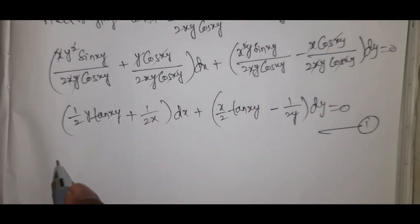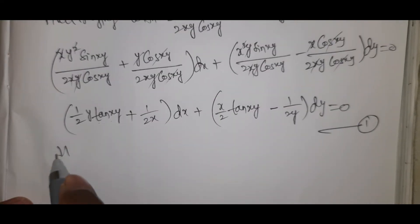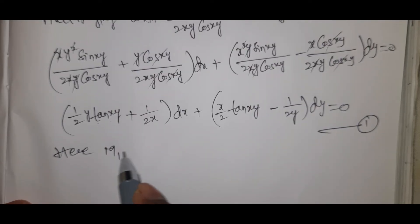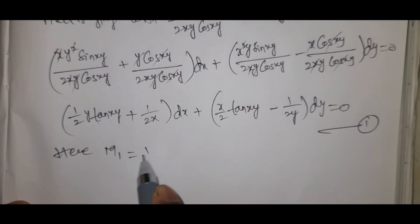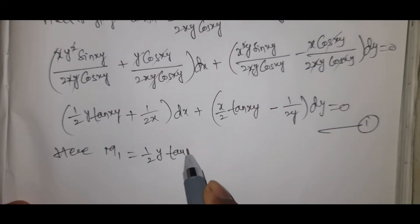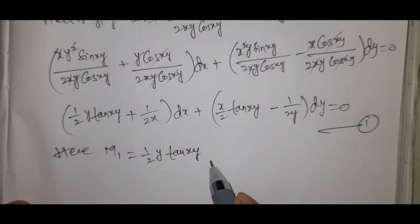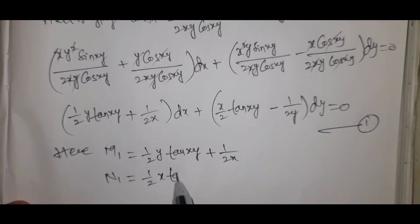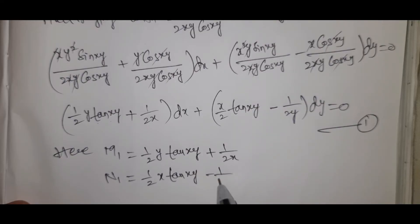Comparing to M·dx plus N·dy, we have M1 equal to (1/2y)·tan(xy) plus 1/(2x), and N1 equal to (1/2x)·tan(xy) minus 1/(2y).